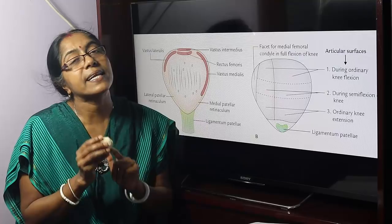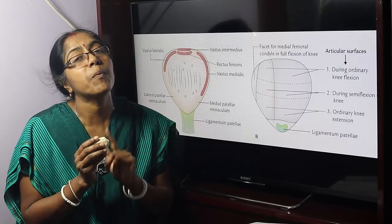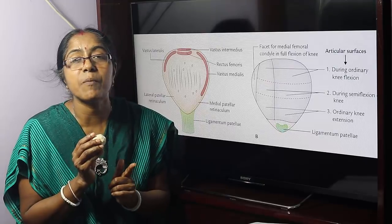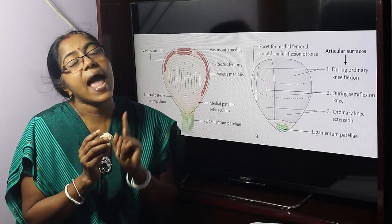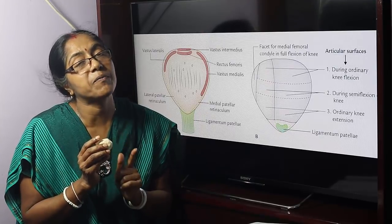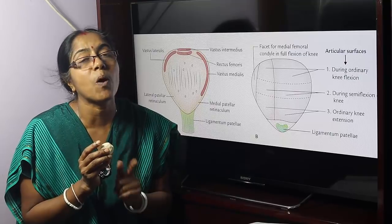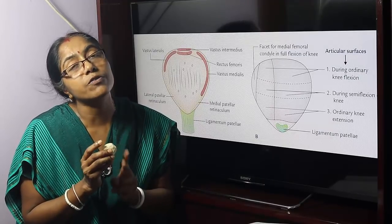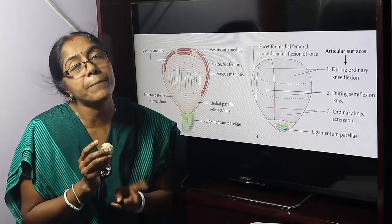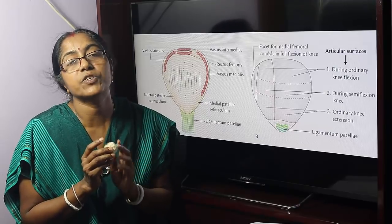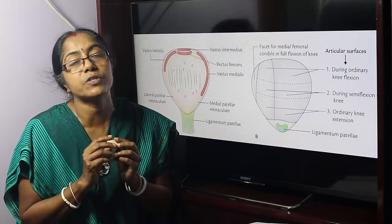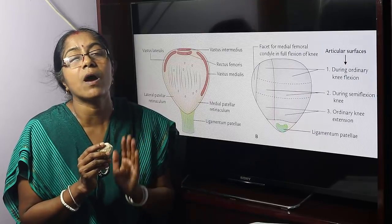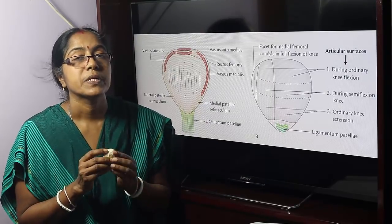The patella is the largest sesamoid bone in the body. What are the characteristic features of the sesamoid bone? They ossify from the tendon of the muscle. Number two, they ossify after birth. Number three, they are devoid of periosteum. And number four, they are devoid of the Haversian system.